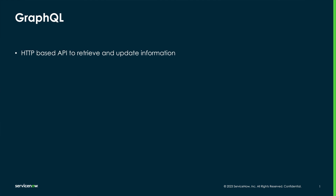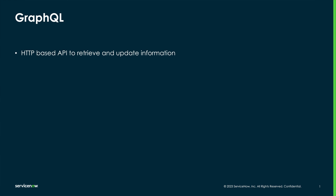GraphQL is an HTTP-based protocol used to retrieve and modify data on a target system, sometimes known as a provider, in much the same way as SOAP or REST does. The advantage of GraphQL is that the payloads it transfers are generally much smaller, so performance is improved and costs potentially reduced.